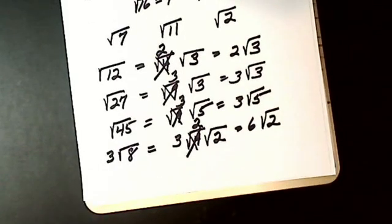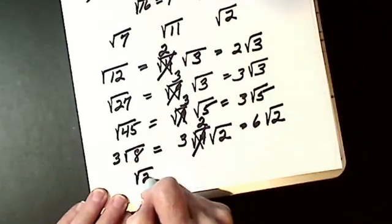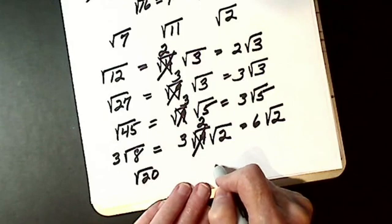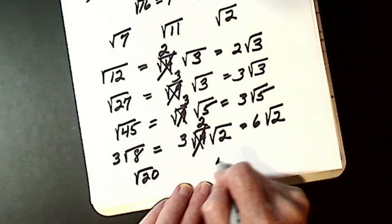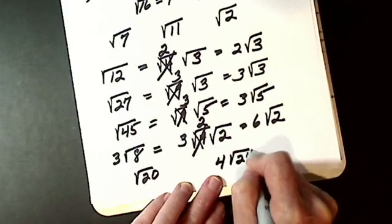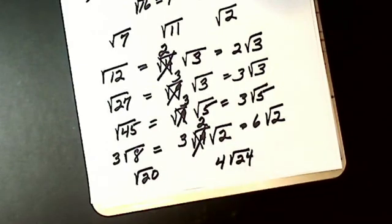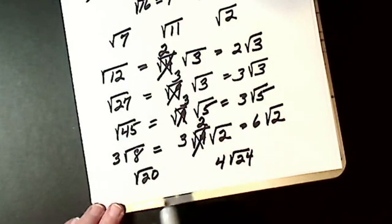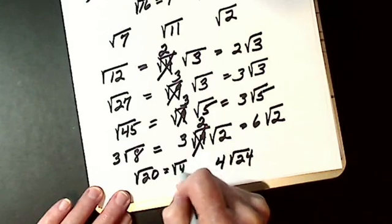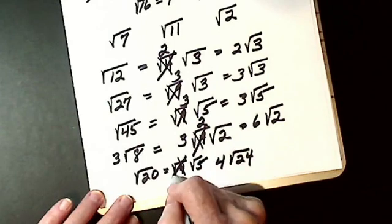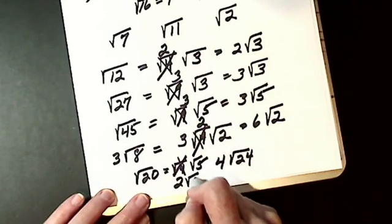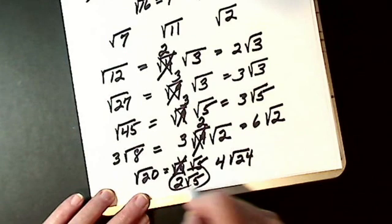Let's try some more. First, the square root of 20. I break the square root of 20 down into 4 and 5. I take the square root of 4 — 2 comes out — so my answer is 2 the square root of 5.